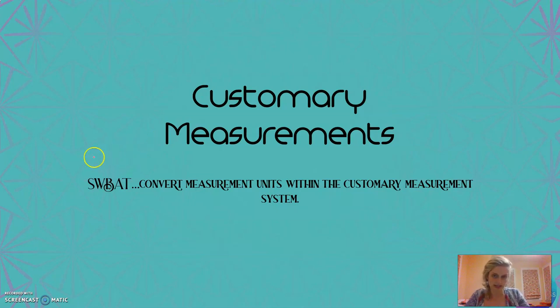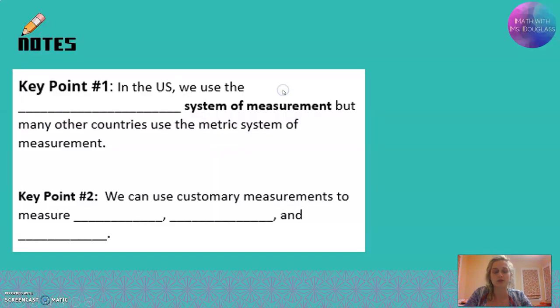I'm going to give you a little hint right here. Customary is only used in the U.S. It's the measurements that we're used to here in the United States. In the United States we use the customary system of measurement, but many other countries use a different system called the metric system. We'll talk about that in a later video. This one is about what we use here in the U.S.